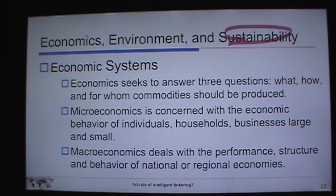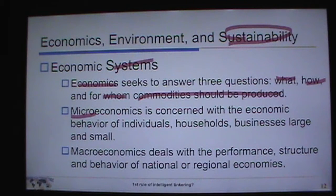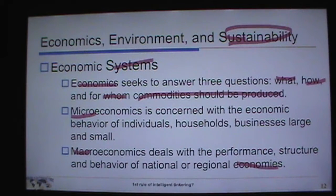In economic systems, economists seek to answer three questions: what, how, and for whom a commodity should be produced. Microeconomics covers the behavior of individuals, households, and businesses — like balancing a checkbook. Macroeconomics addresses the performance, structure, and behavior of larger economies. When we discuss the economic side of environmental science, we're trying to influence how macroeconomics are designed so they can trickle down to the local or micro level.